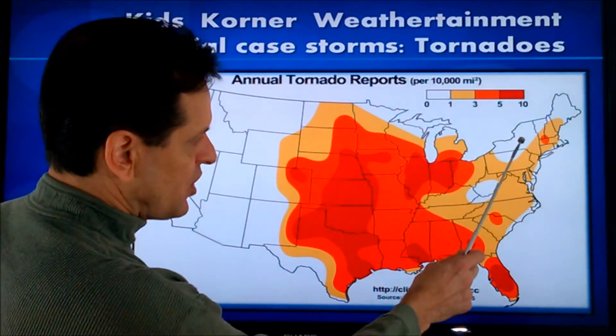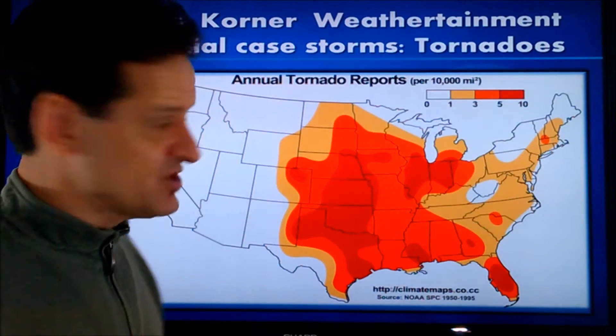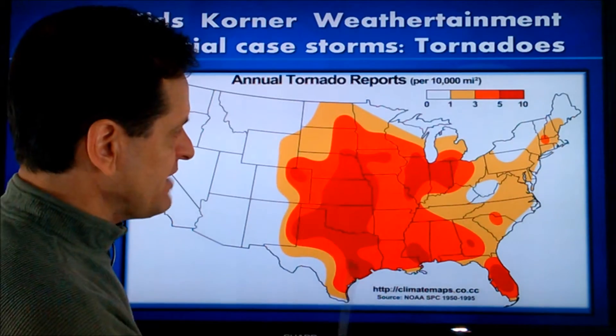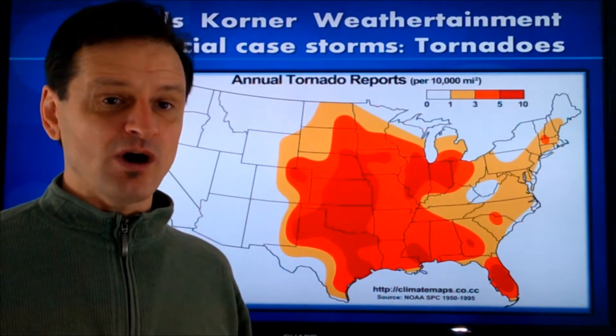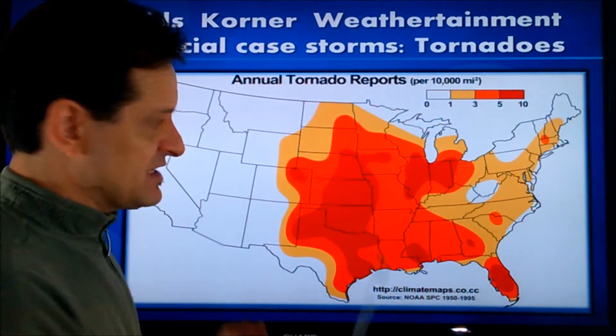How about closer to home here in New York? How common are they? We average here in central New York about one tornado every two years. That doesn't seem like a lot, but of course any tornado can be devastating, so they're never welcome wherever they go. The middle of the country — the prime area where the coldest and the warmest air meets — can see as many as ten per year or more. So we only see them here once every two years on average, while in the middle of the country they see them every year and ten times per year.